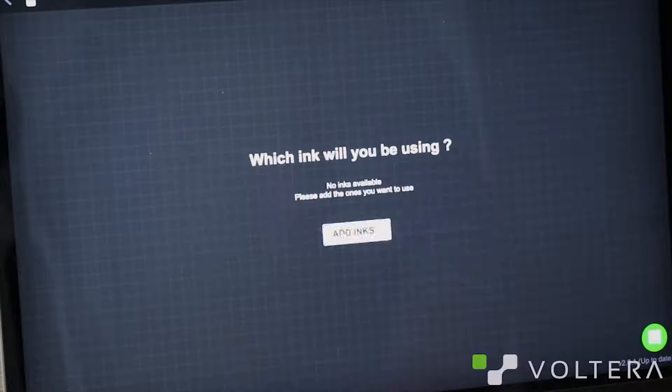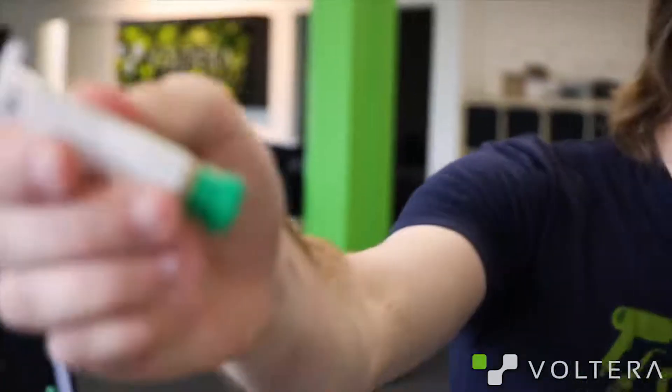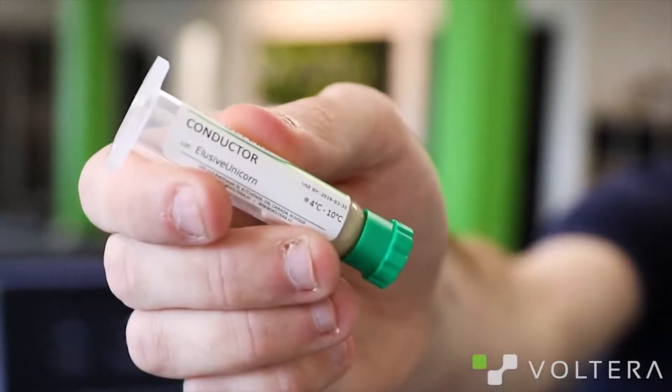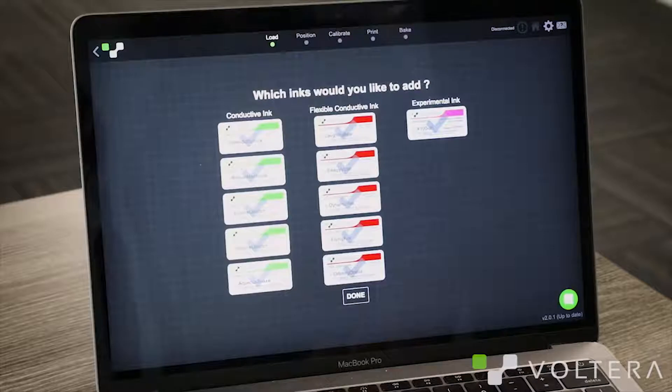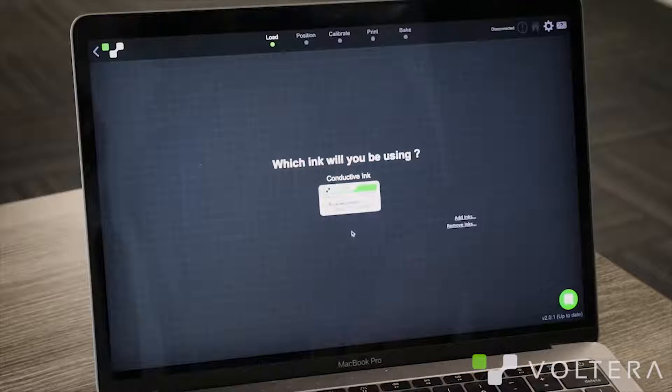Next, we need to select which ink we're using. Take a look at your cartridge and see which ink name you have. Next, select the ink in the software to load a customized profile specific to your ink, for the best possible print.